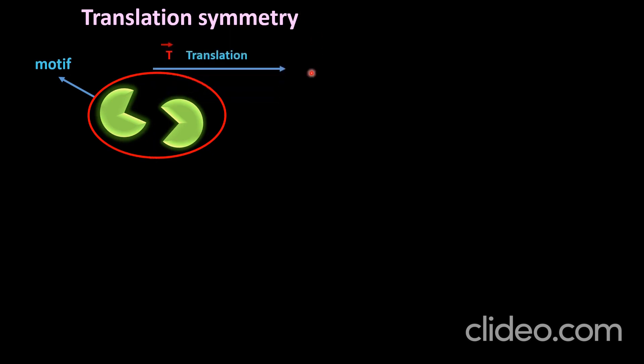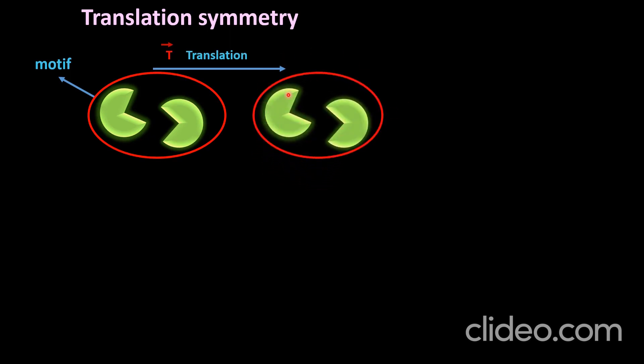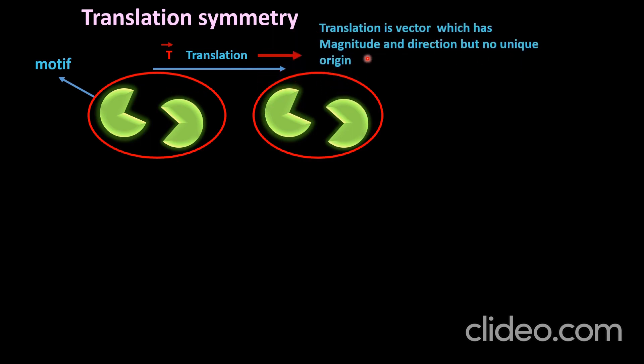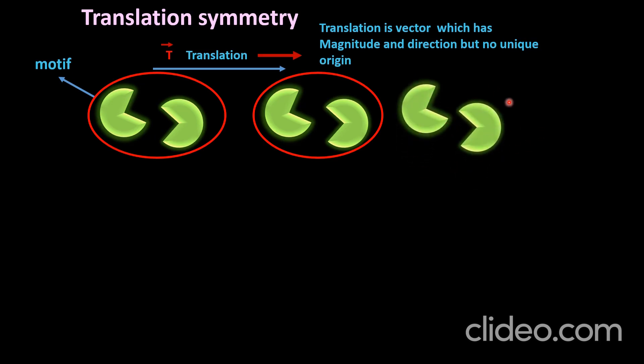First, we will discuss translation symmetry. We take a symmetry pattern, also called a motif. If we apply the translation symmetry operation, we get the same set of motifs at some distance from the original. This translation operation is represented by T, which is a vector with magnitude and direction but no unique origin. If we apply the same translation operation again and again, we get another set of motifs — we can extend them in all directions.